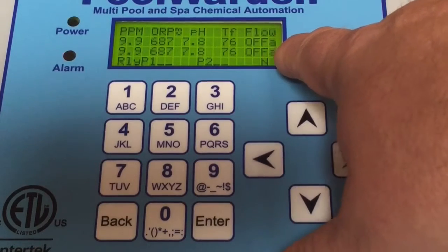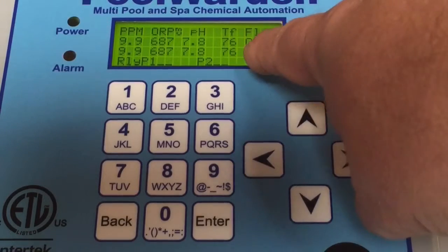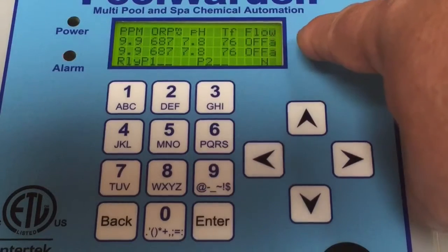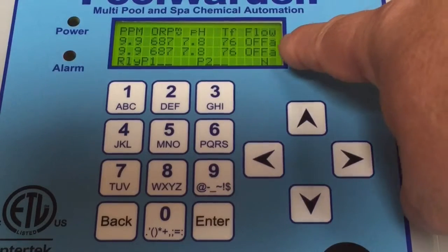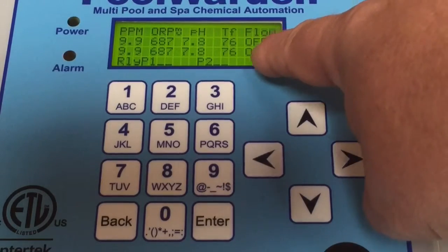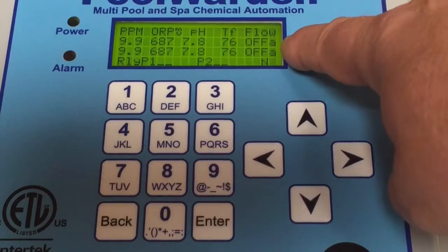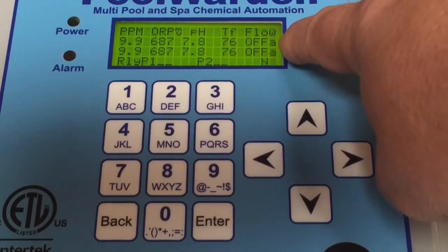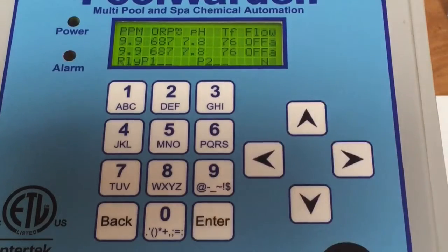On flow, these are both off because this is a demo unit, but normally these would read on, meaning there is flow through the bypass and it will allow it to feed chemicals. If this says off, it cannot feed chemical. Next to this, you have an A for alarm.